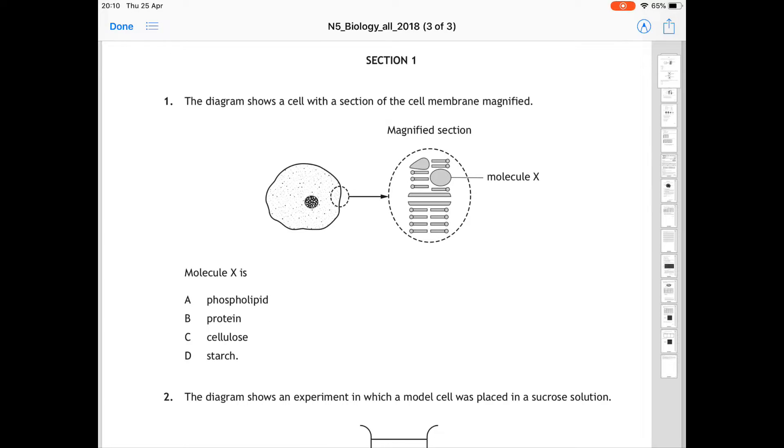In question 1, the diagram shows a cell with a section of the cell membrane magnified. So hopefully you should remember that the cell membrane is made up of proteins and phospholipids, so it can only be answer A or B. But Molecule X is pointing at the large blob-like structures in the cell membrane, which are proteins. So Molecule X, the answer is B, protein.